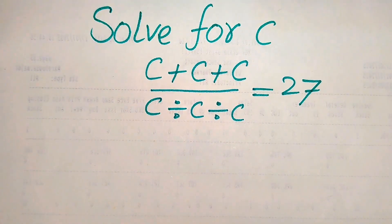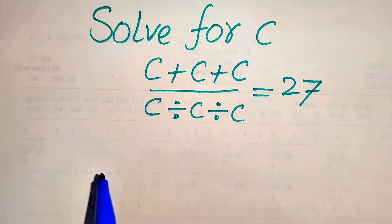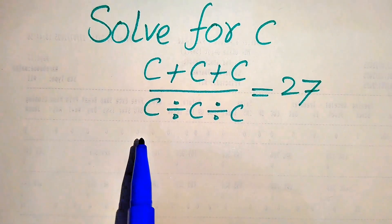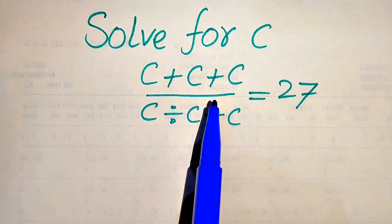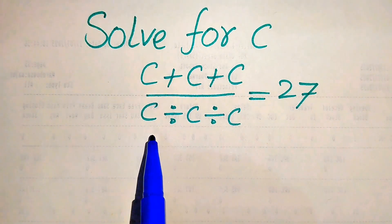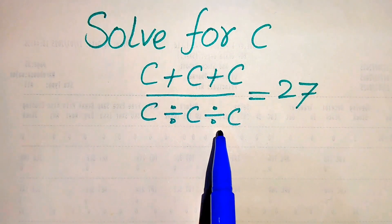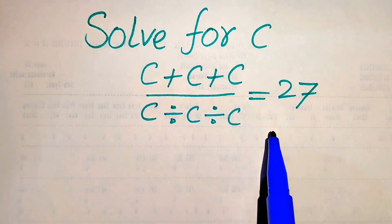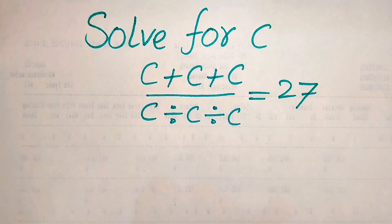Hello everyone. How to solve this problem for the values of C if we have C plus C plus C divided by C divided by C divided by C equals 27, and we solve this problem for the values of C.